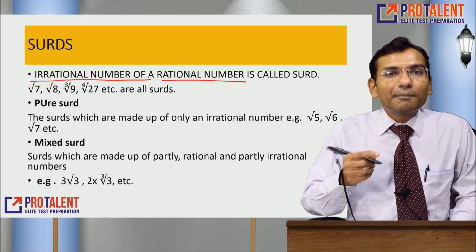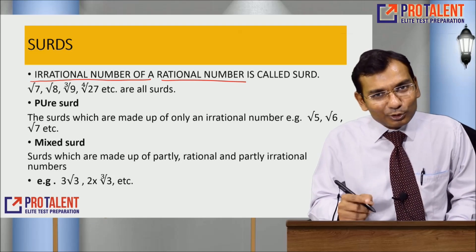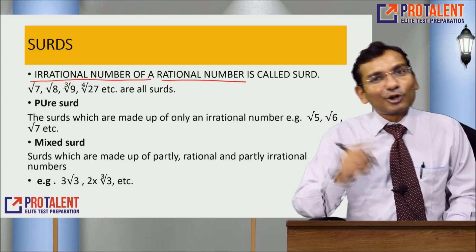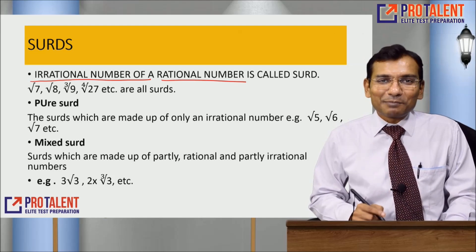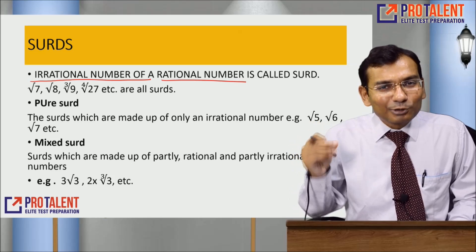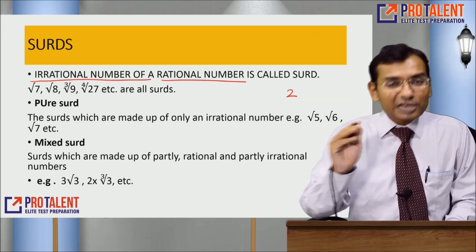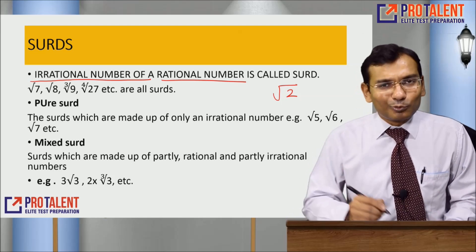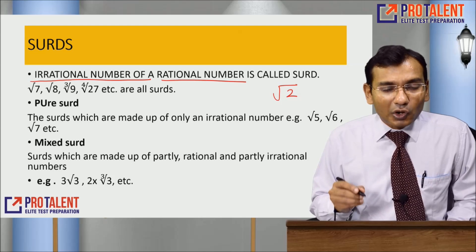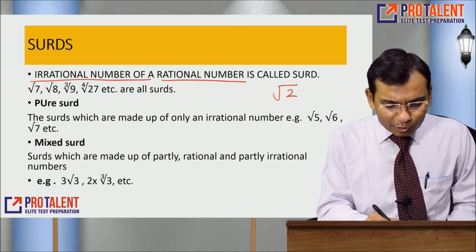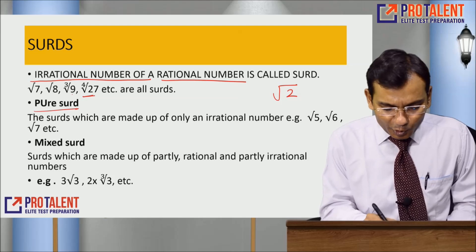A rational number is in the p by q format. Rational numbers are generally in the p by q format, or irrational numbers which are non-terminating or non-repeating. What is called a surd? It is called a surd — for example, square root of pi, cube root of nine, fourth root of twenty-seven. These are all examples of surds.